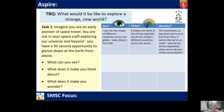So I want you to take those ideas now and get them down on paper. The task I would like you to complete is: imagine you are an early pioneer of space travel. You are out in your spacecraft exploring our universe and beyond. You have a 30-second opportunity to glance down at the Earth from above and I want you to think about these three questions: what can you see, what does it make you think about, and what does it make you wonder? There is a table on the screen for you to copy down on your piece of paper, and there's an example to get you started.